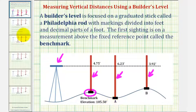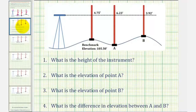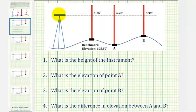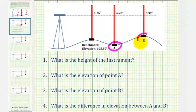Let's take a look at our questions. We first want to determine the height of the instrument, which we can think of as the elevation of the builder's level. Next, we want to find the elevation at point A, the elevation at point B, and then find the difference in elevation between point A and point B.